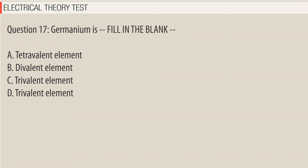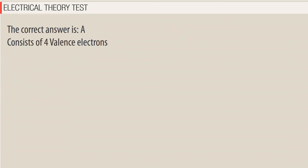Question 17. Germanium is — fill in the blank. A. Tetravalent element. B. Divalent element. C. Trivalent element. D. Trivalent element. The correct answer is A — Tetravalent element, consisting of four valence electrons.